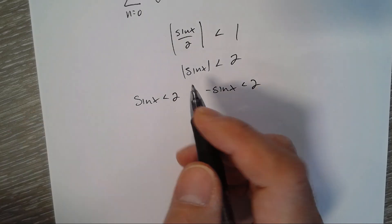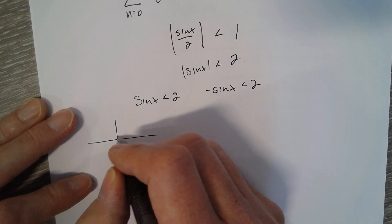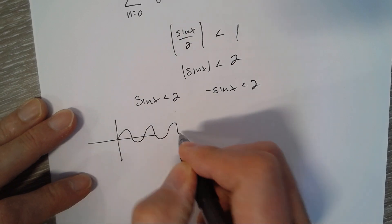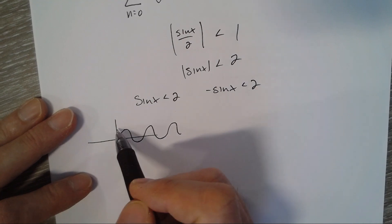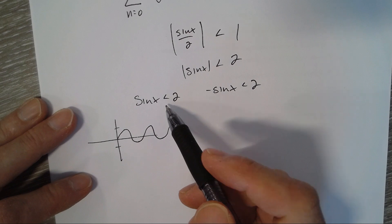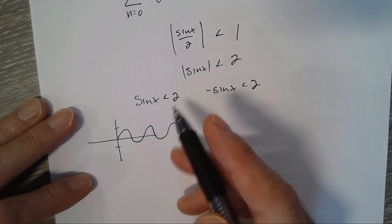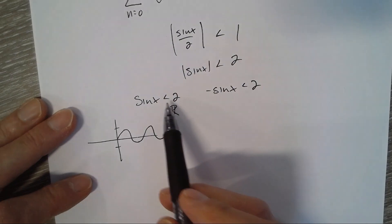well where is sin x less than 2? We know that the graph of sin x oscillates between negative 1 and 1. It'll always be less than 2. So that would be all real numbers for this inequality here.